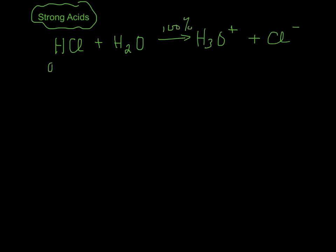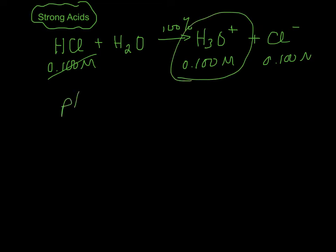So if I start with 0.1 molar of this, it's going to all be gone. And I'm going to make 0.1 molar of H3O+ and 0.1 molar of Cl-. Well, now I know the concentration of hydronium ion. So the pH is just negative the log of 0.1. And that should come out to be 1.000.